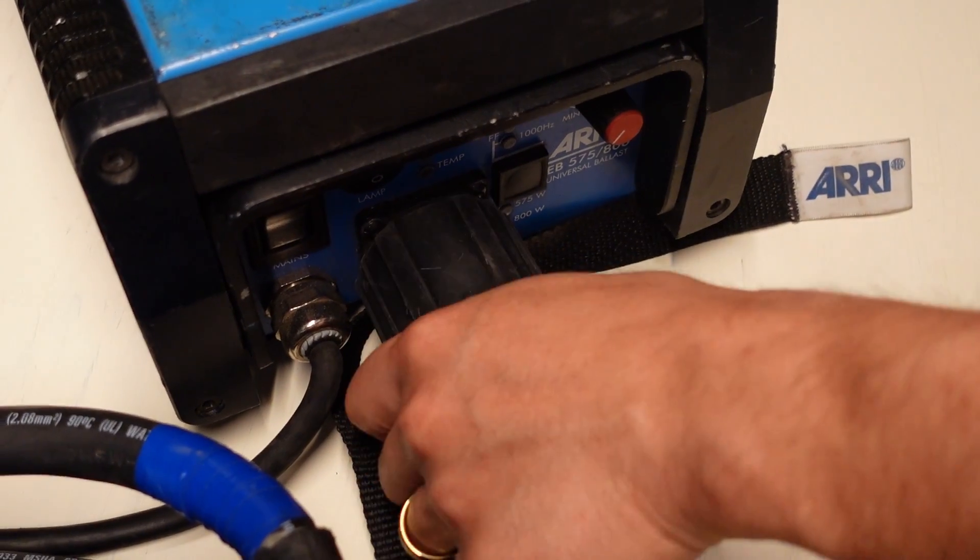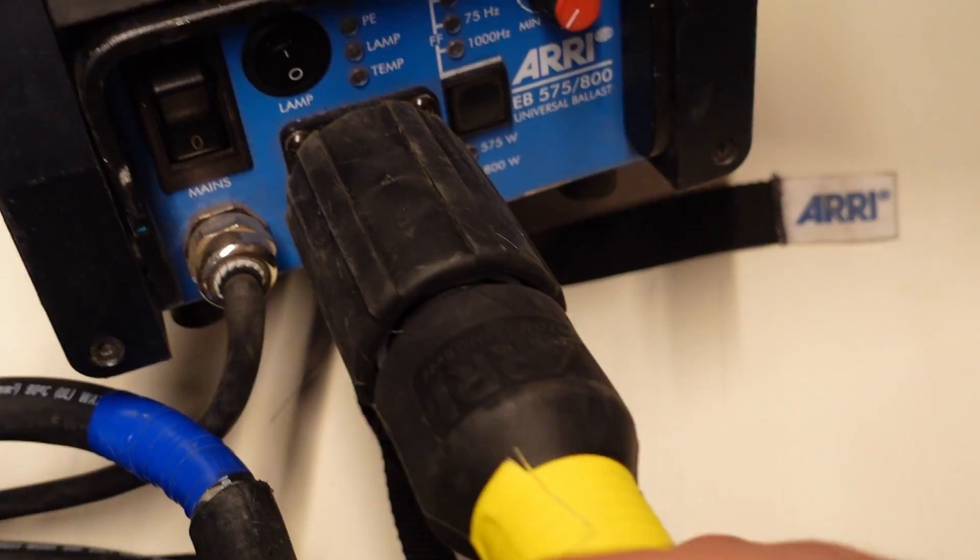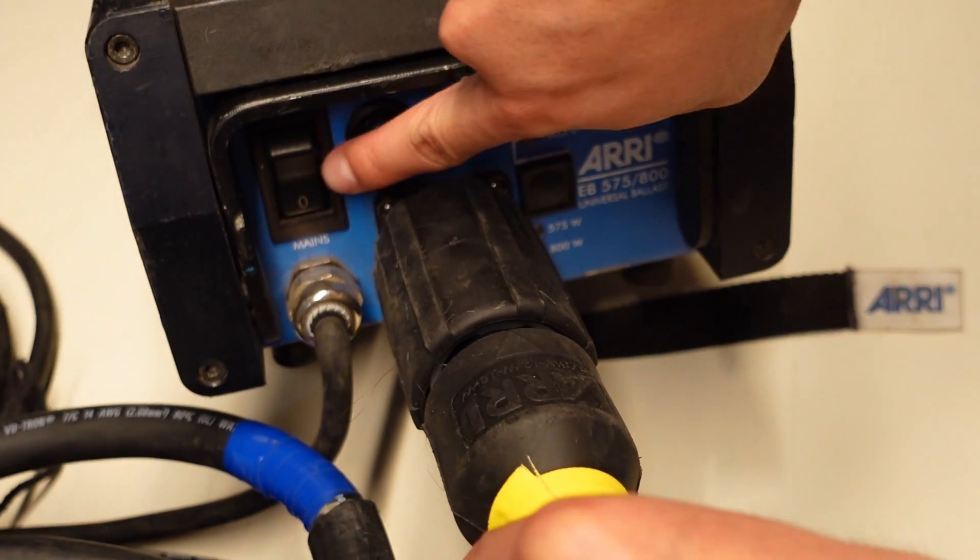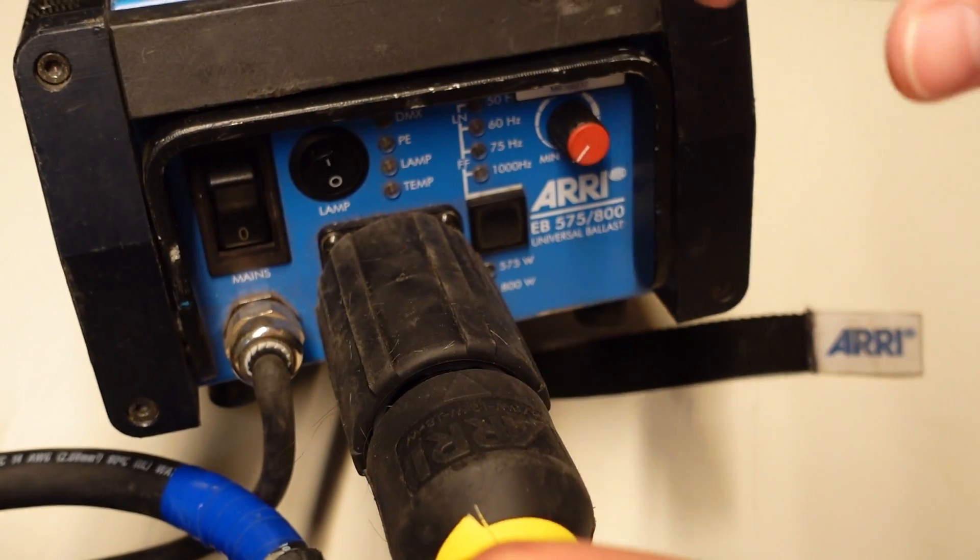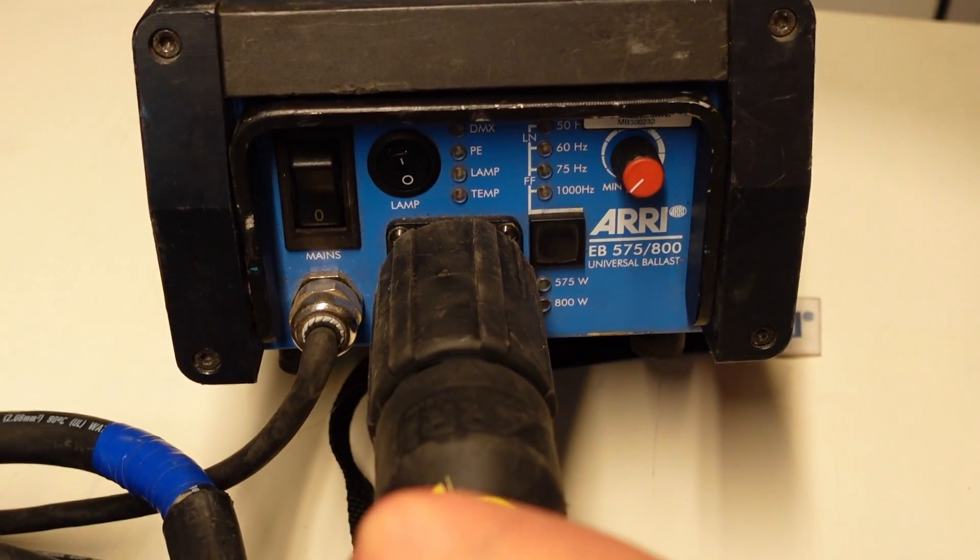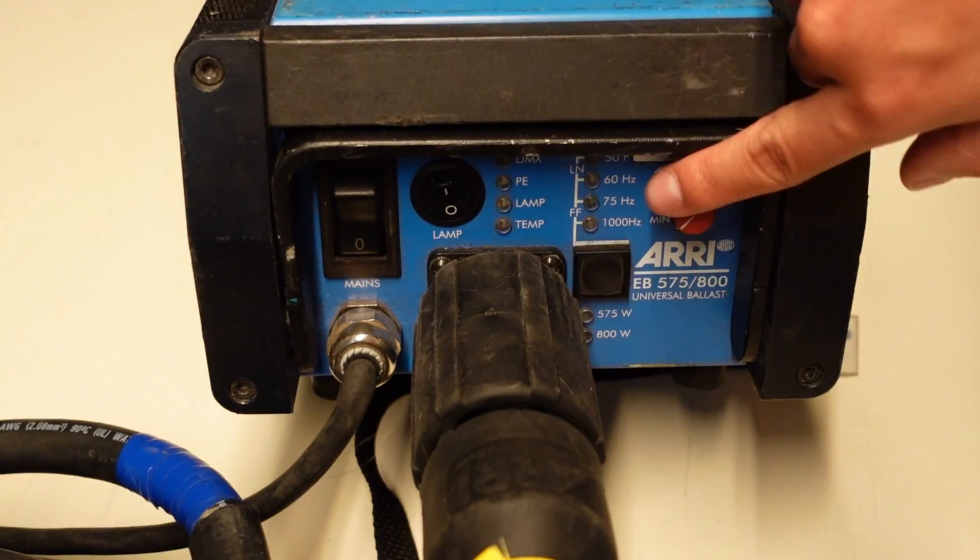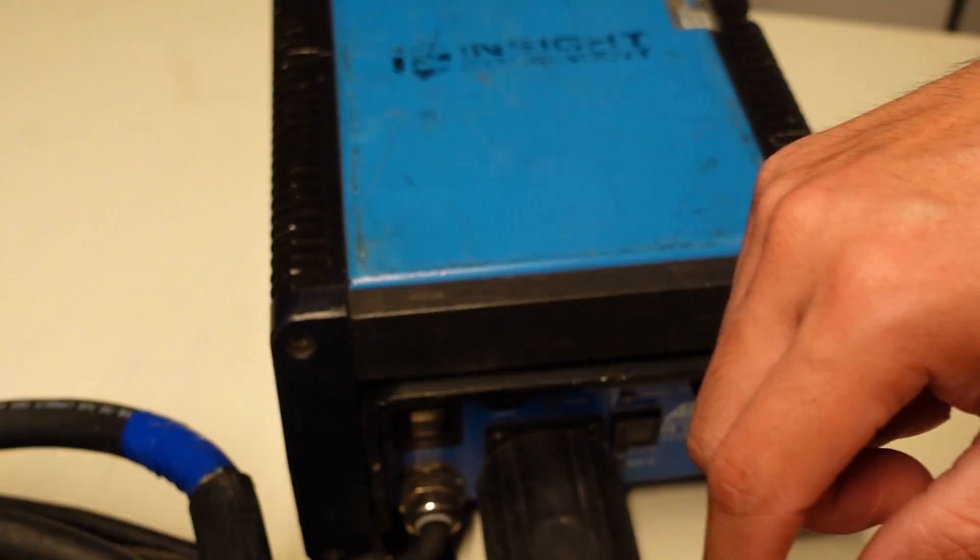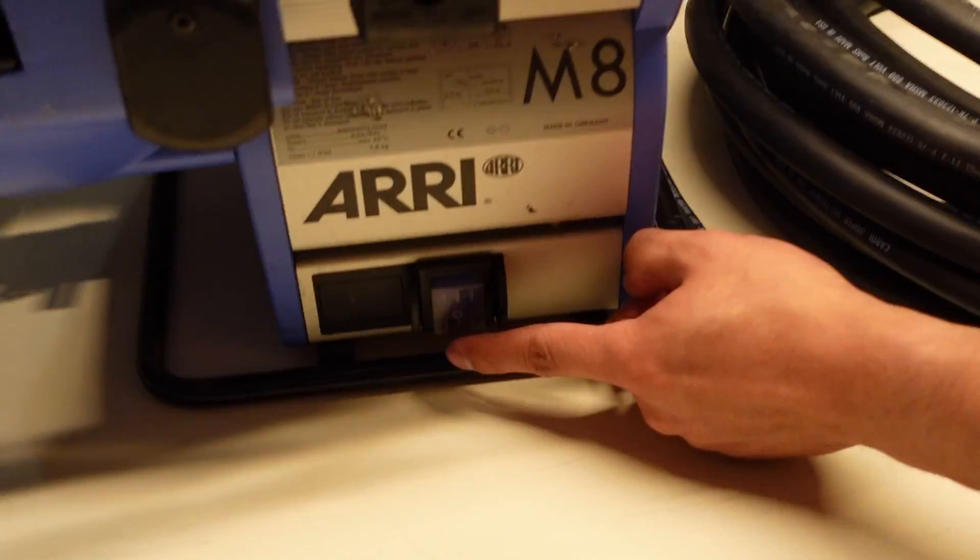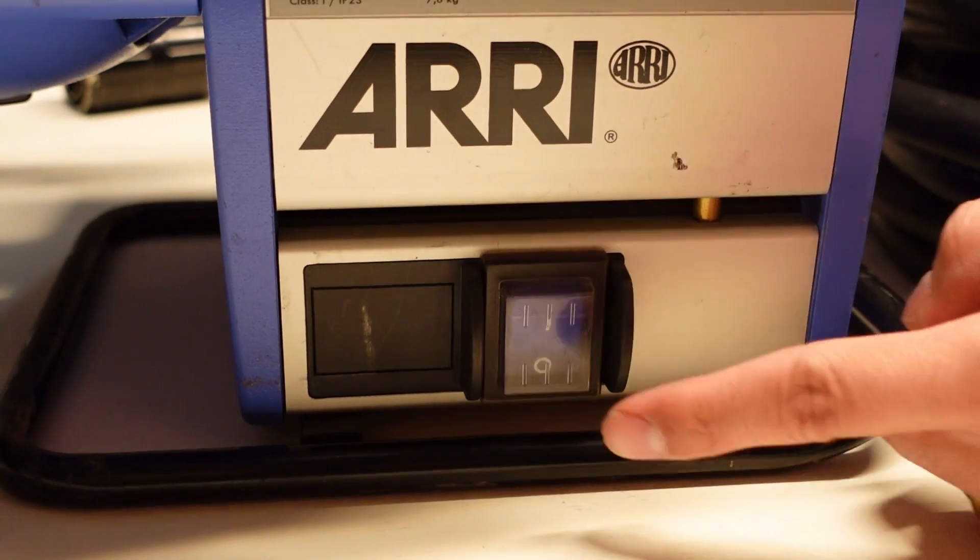You also want to make sure that the switch of the ballast and the lamp switch on the ballast are off. I also make sure that the switch on the head is off as well. On set, you want to position the head first where you want the light to be, and then run the header cable down all the way to where your ballast is. Now we're ready to plug in the power.